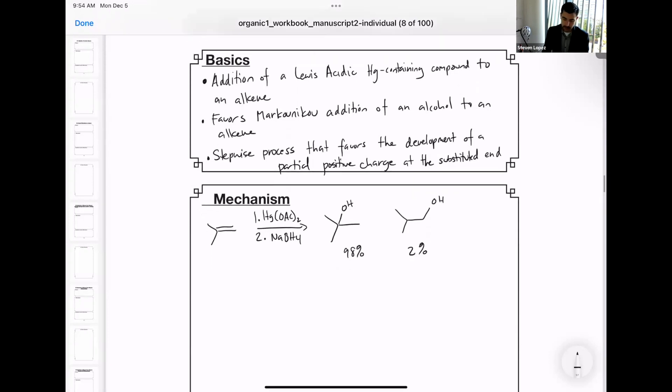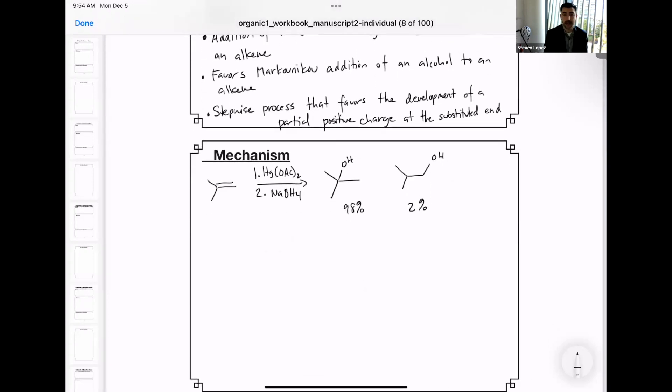Here's an example that I've written out. This involves a dimethylated alkene in the presence of mercuric acetate first followed by sodium borohydride as a second step. This affords quite a high selectivity for the Markovnikov product with a 98% yield.